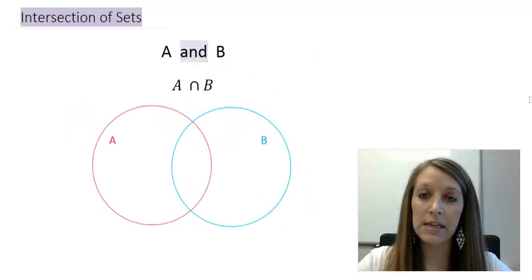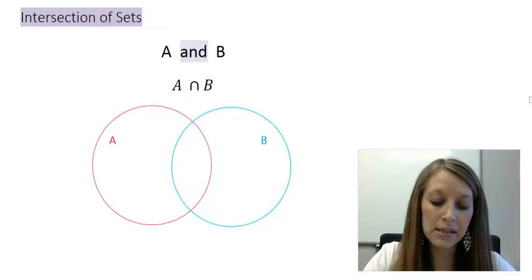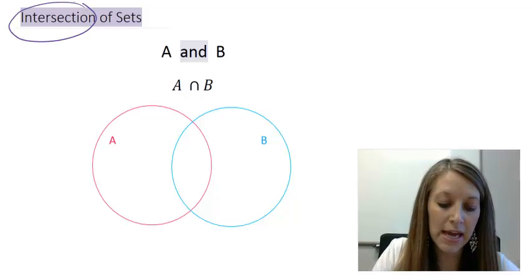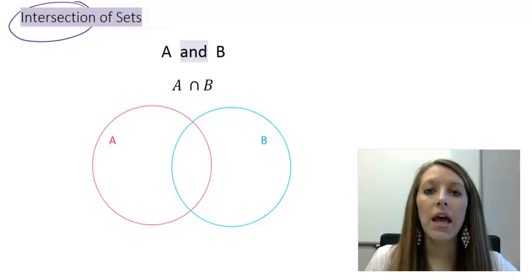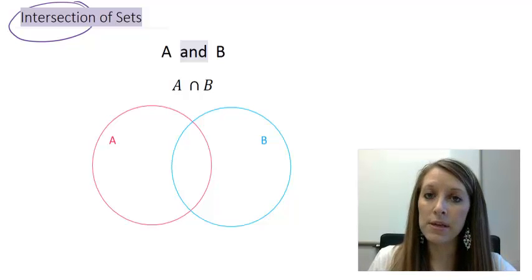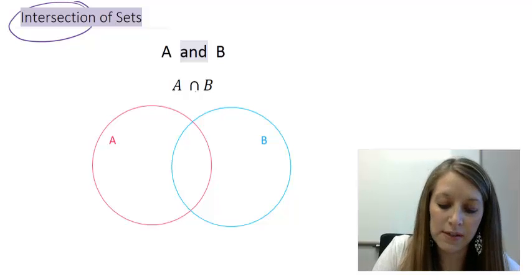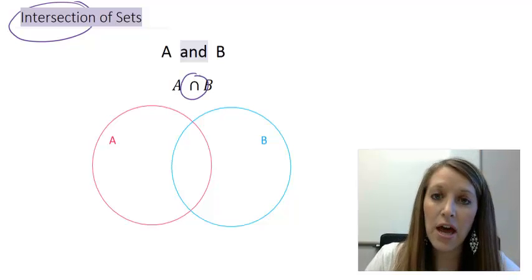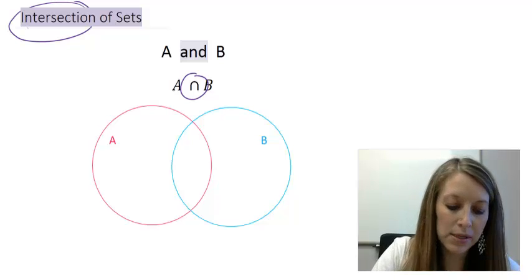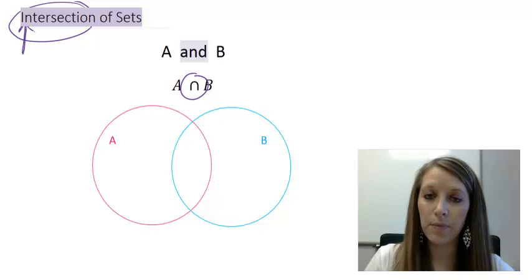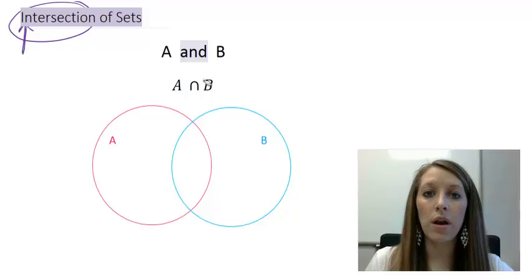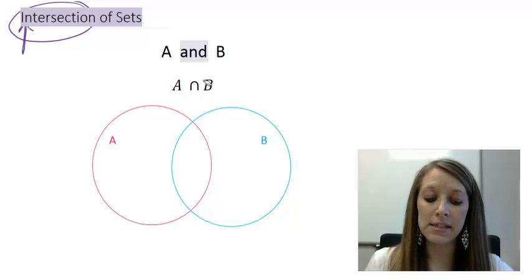So, the first thing that we are going to start with is an AND statement. And whenever we see an AND statement, that is the same as an intersection of sets. And just so you are aware of it, the symbol that represents an intersection of sets is this symbol here. It kind of looks like an N to represent the N for intersection. To help us understand what an intersection of sets are, I have drawn up a Venn diagram here with these two circles. An intersection of sets is when our two sets actually overlap.